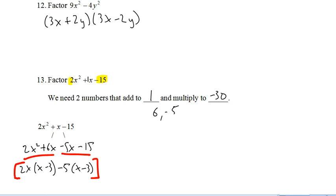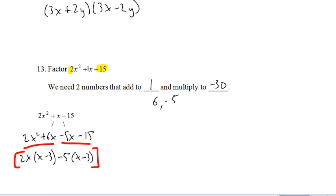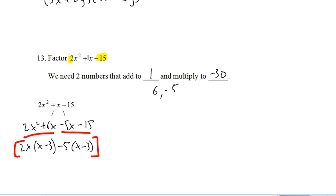Now if I draw big brackets around that, I've got x minus 3 in both of those. So x minus 3 comes out, and then left inside the big red brackets I have 2x minus 5. You don't need the red brackets on that one, but I just use them to illustrate how it works.